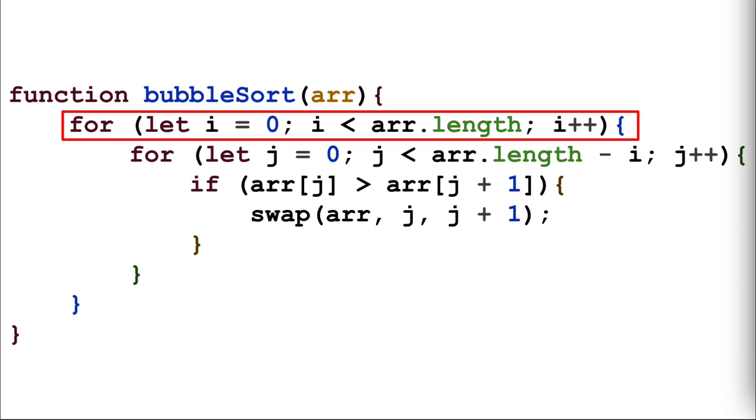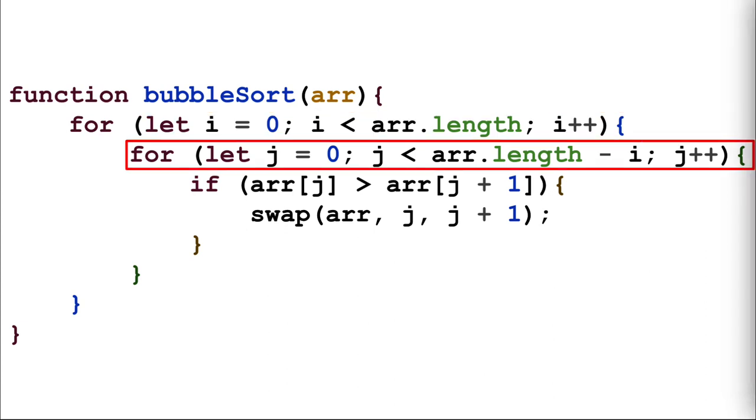Our bubble sort algorithm makes use of a nested for loop. In the outer for loop, we create a variable i so that it can iterate through the entire array. For our inner for loop, we're creating a variable j so that it can iterate through the length of the array minus i. Because the largest element will move to the end of the array after each pass, so there's no need to compare the last i elements in each subsequent pass. If you remember from our walkthrough earlier, once we got 5 all the way to the end, we never compared any of the other elements to it again.